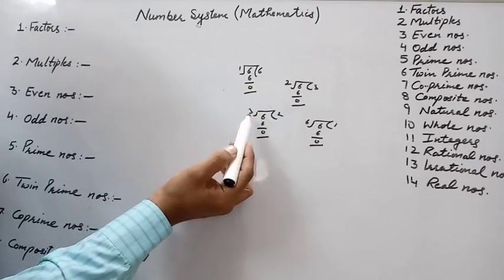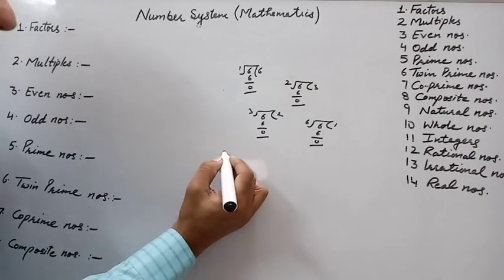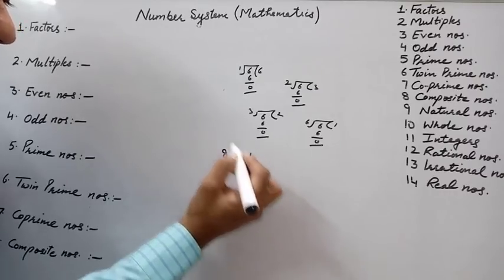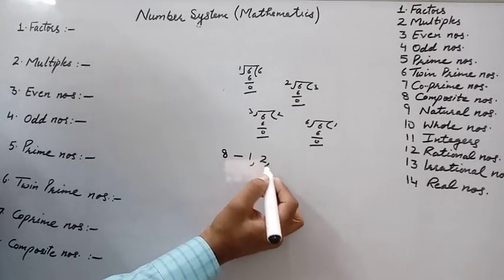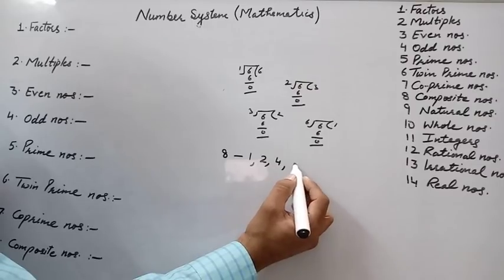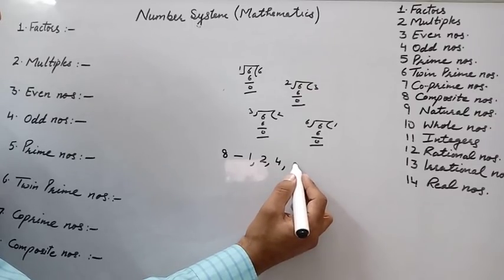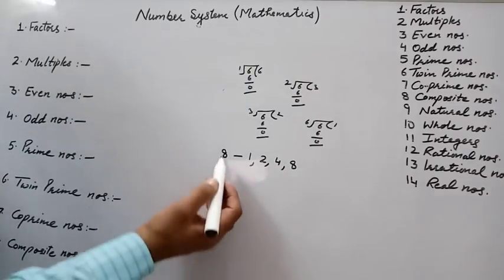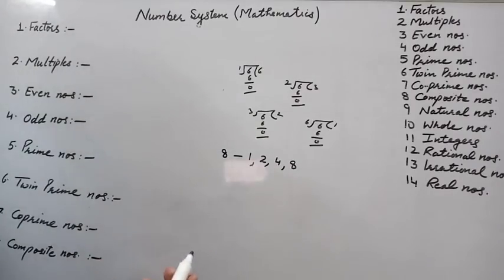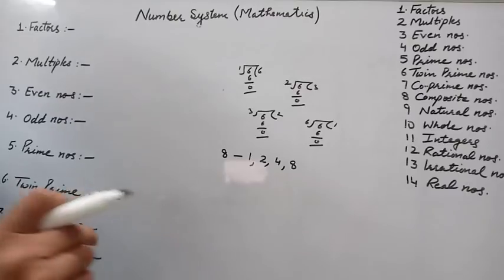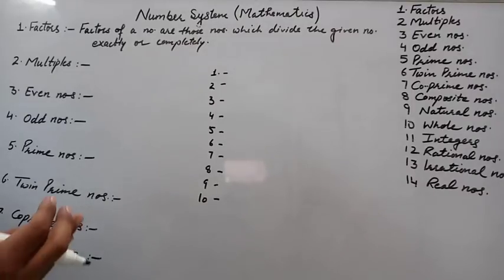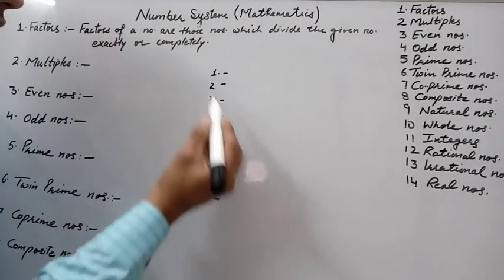For 6, factors are 1, 2, 3, 6. Now let's write the factors of 8. Dividing 8: 1 divides completely, 2 also, 3 does not, 4 also, 5 no, 6 no, 7 no, 8 yes. So factors of 8 are 1, 2, 4, 8. Factors of a number are those numbers which divide the given number exactly or completely.